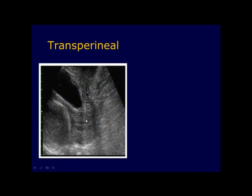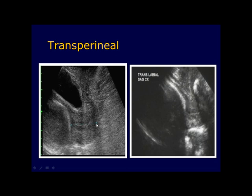This translabial sonogram shows the vagina near the probe appearing at the top of the monitor, parallel to the beam. The cervix is perpendicular to the beam, with the anterior lip, posterior lip, and endocervical canal visible. Cervical length is measured from the internal os to the external os. In another translabial image, gas in the rectum obscures the external os, making it impossible to evaluate the cervix.